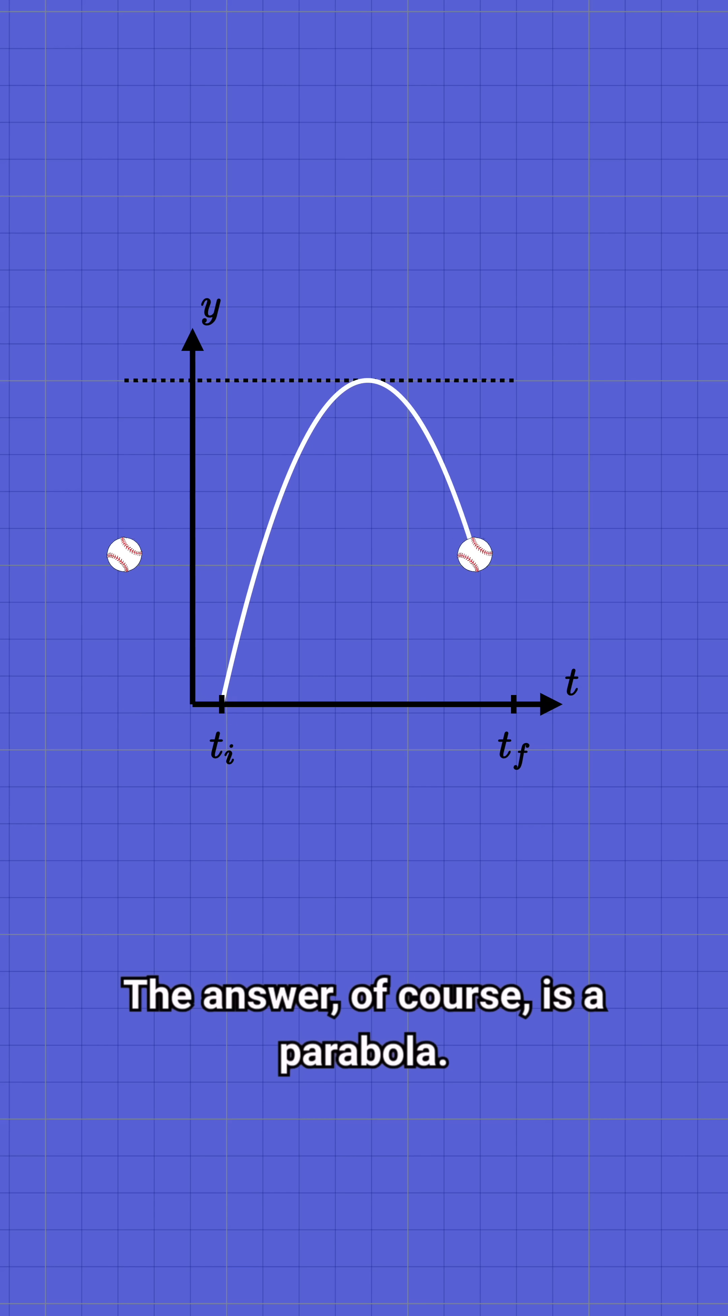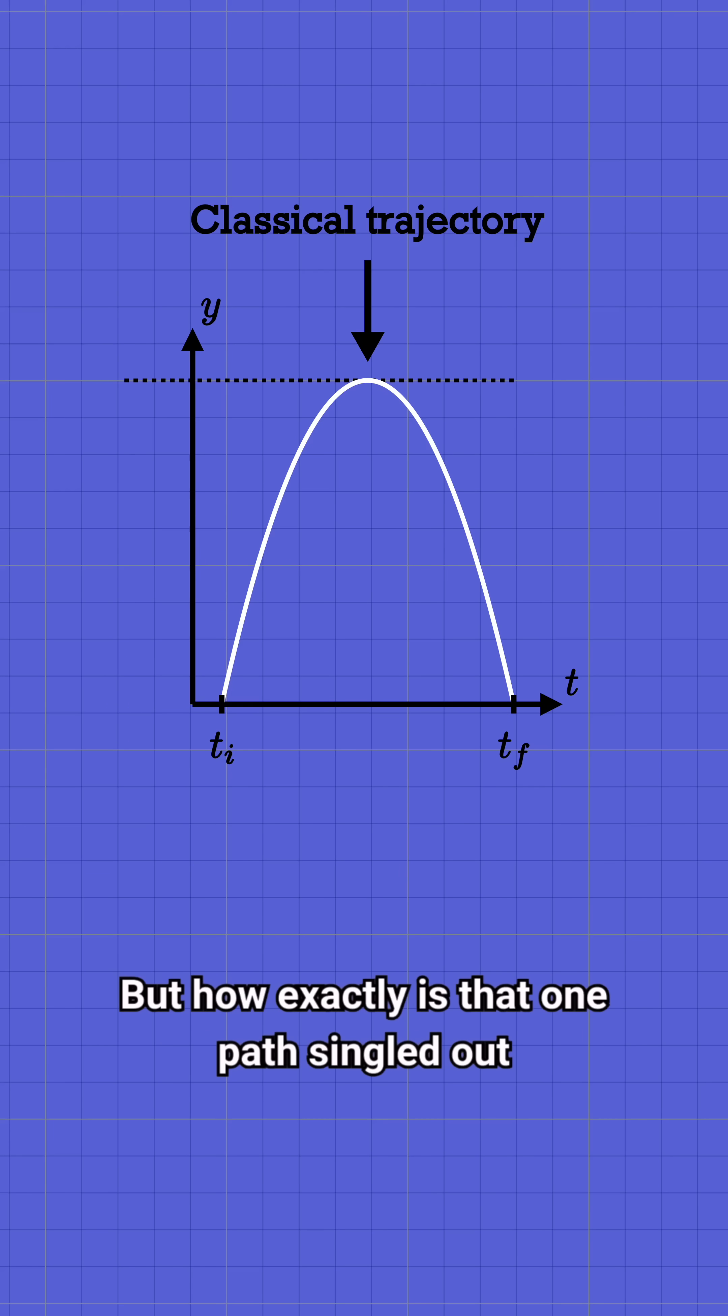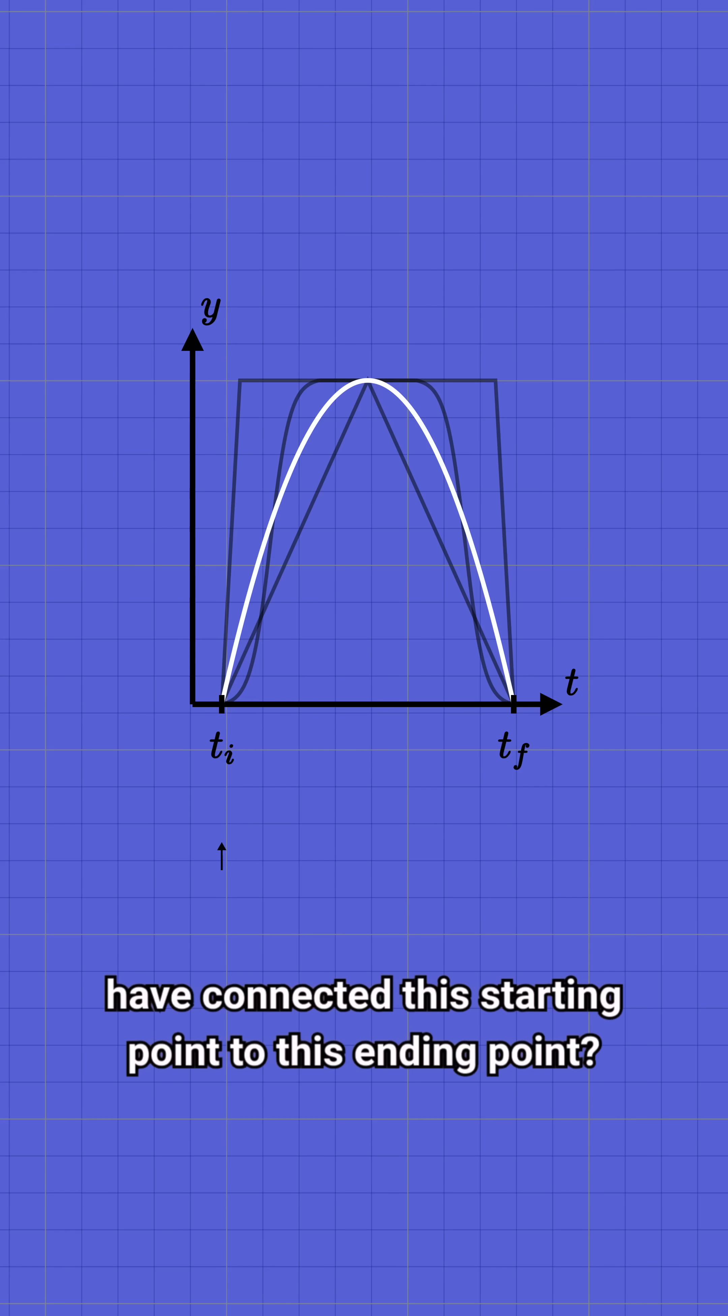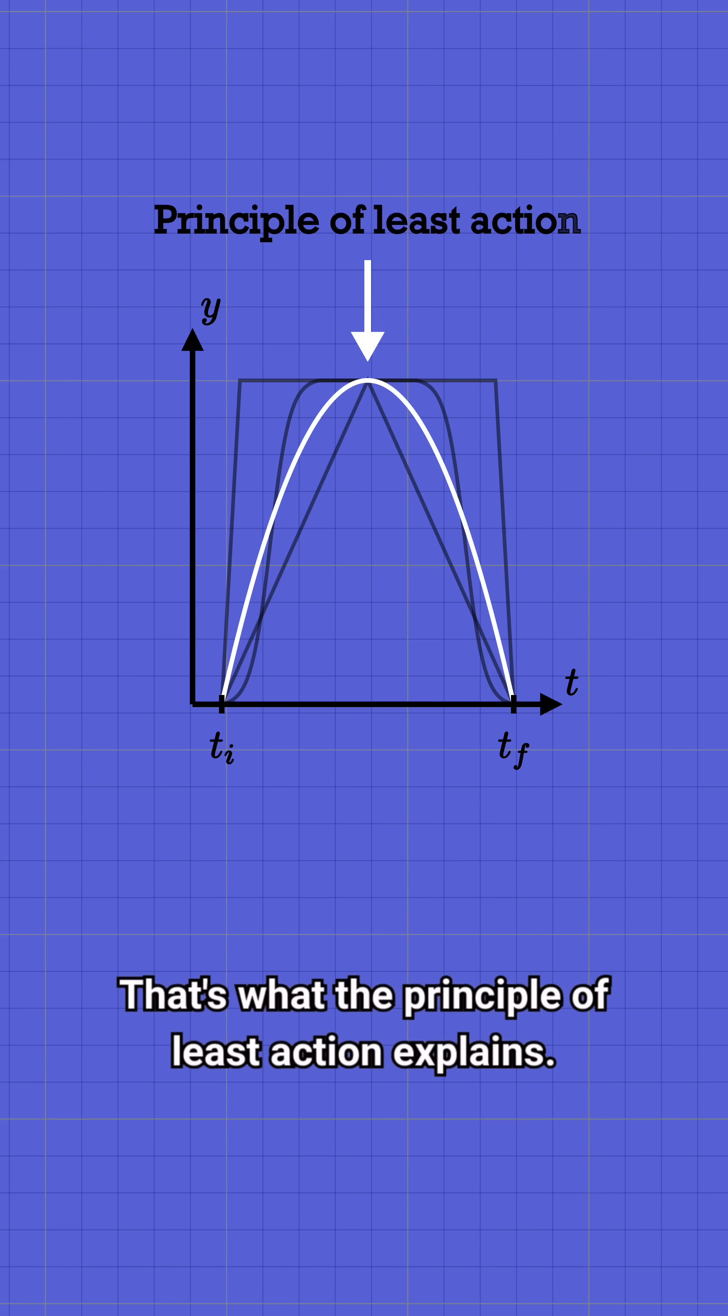The answer, of course, is a parabola. But how exactly is that one path singled out out of all the conceivable trajectories that could have connected this starting point to this ending point? That's what the principle of least action explains.